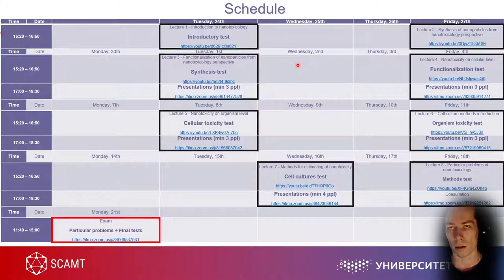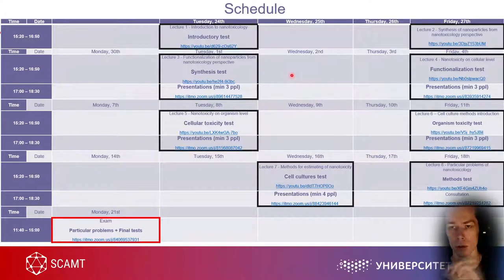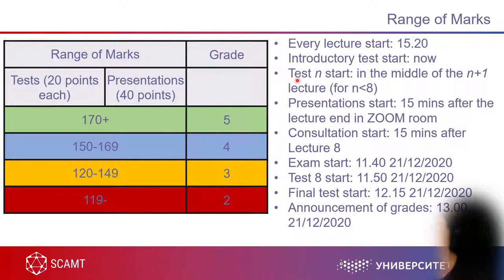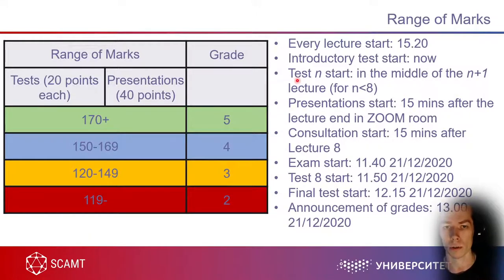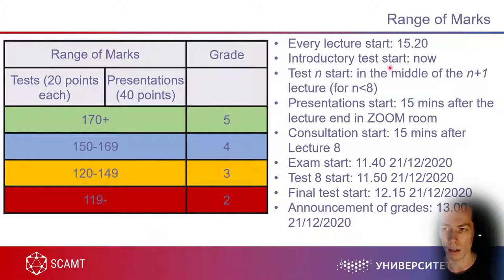You must download your presentations and reports in the same folder where the reports list is. You can create a folder with your surname and put your report there. About assessments: we will have 8 tests, 20 points each, 20 questions — so 160 points total. Presentations are 40 points, making a total of 200 points. A score of 170 or above earns a grade of 5, and so on. Every lecture starts according to schedule.